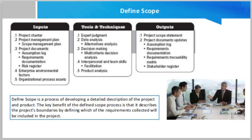The project management plan documents how the project scope will be defined, validated, and controlled. Examples of project documents that can be listed as inputs for defining scope include the assumption log, which identifies the assumptions and constraints about the project, product, stakeholders, environment, and other factors that can influence the project and product scope. Requirement documentation covers the process of identifying the list of requirements to be incorporated into the project scope. The risk register mainly contains response strategies that may affect the project scope by reducing scope to avoid or mitigate a risk.